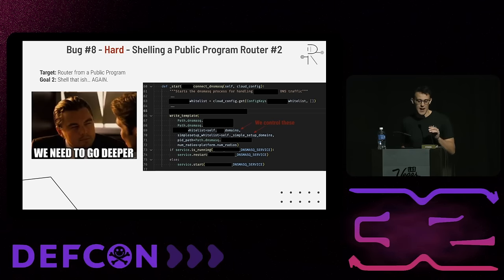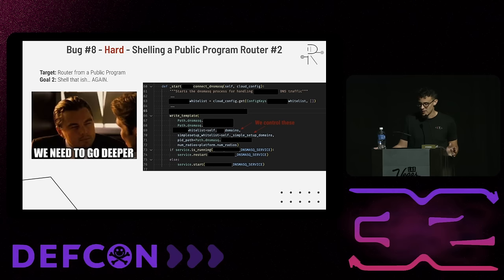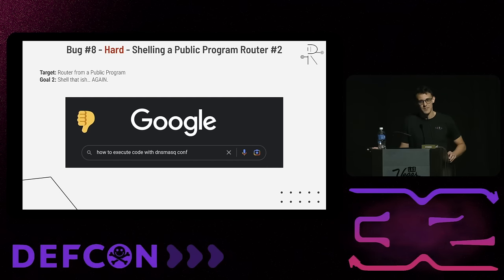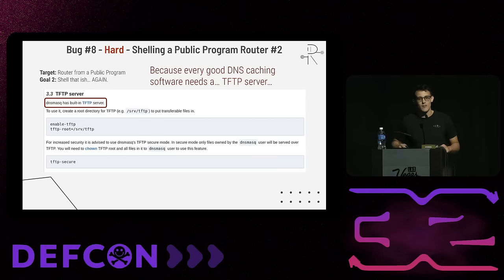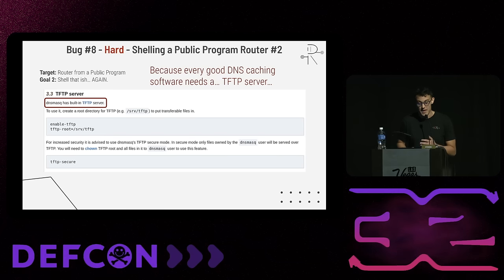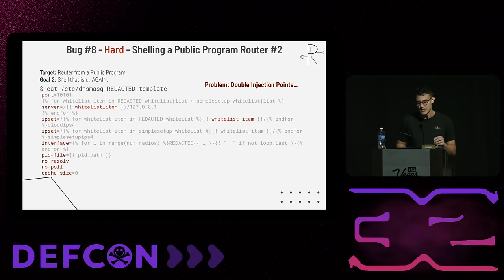Another vulnerable endpoint on that same target was doing the same thing for dnsmasq — let's see if we can do the same thing there. We Googled how to execute code with the dnsmasq config and nothing came up. Unfortunately, there's not a great way to do that. However, what every good DNS caching software needs is a built-in TFTP server. That can be turned on via a dnsmasq configuration. But we had double injection points this time around in the template, and the user-root directive required to open the TFTP server cannot be duplicated twice — just that one directive.